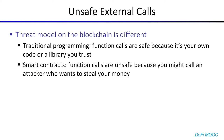To understand why, we need to take a look at unsafe external calls. Threat modeling is very important, and on the blockchain, the threat model is significantly different than in traditional programming. With traditional programming, you typically assume that function calls are safe to make because you're either calling into your own code or a library that you trust. On the other hand, on the blockchain, function calls are inherently unsafe because anyone can deploy to the blockchain, and when you call a function, you might be calling some untrusted code that an attacker has deployed.